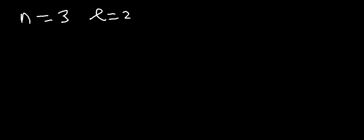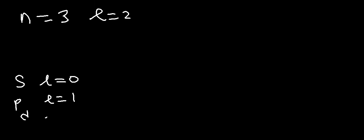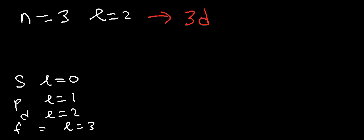The third case is when they give you the value of N and L. Let's say N is 3 and L is 2. For reference: L is 0 for S, L is 1 for the P sublevel, L is 2 for D, and L is 3 for F. So when N is 3 and L is 2, we have the 3D sublevel. In a 3D sublevel, you can have a maximum of 10 electrons. So the answer is 10.